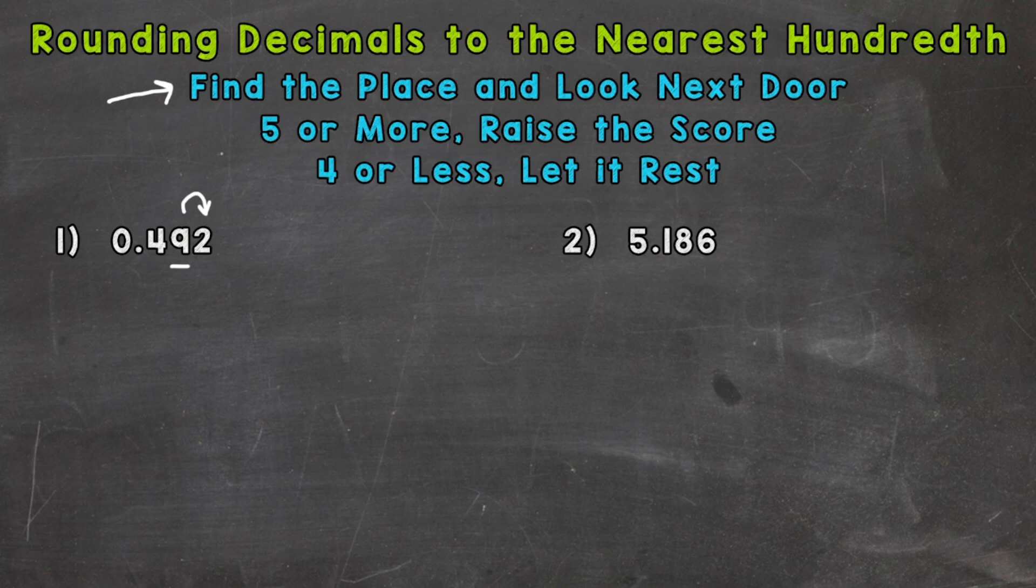Now we need to determine is that two five or more and we raise the score which means round up? Or is that two four or less and we let the nine rest? Well two is four or less so we let the nine rest. And our rounded answer is going to be 0.49.